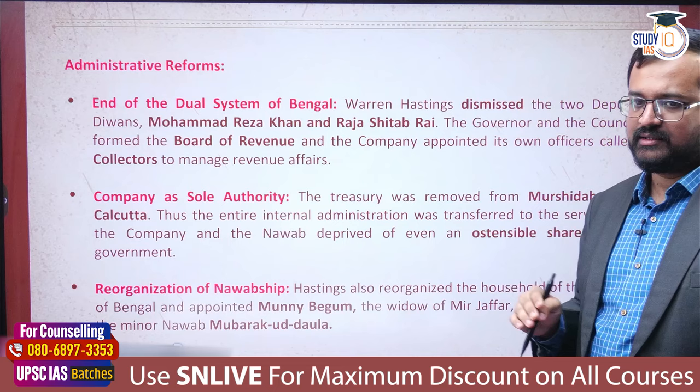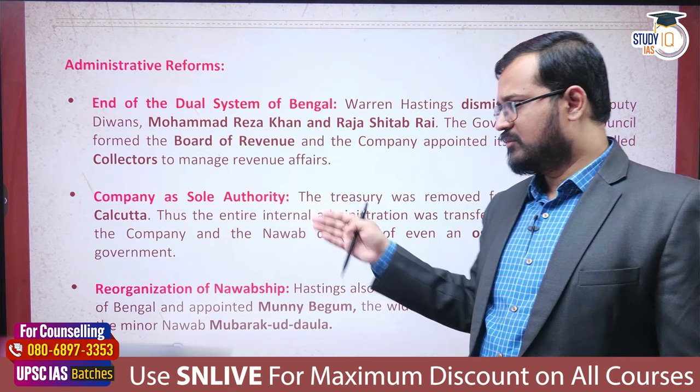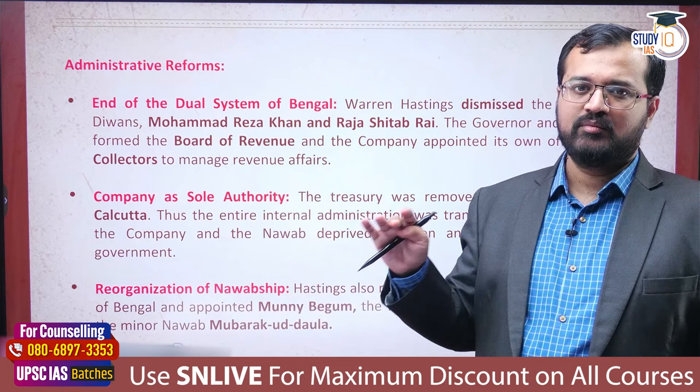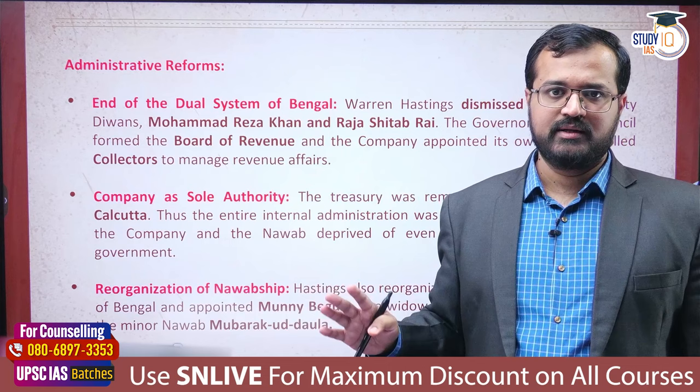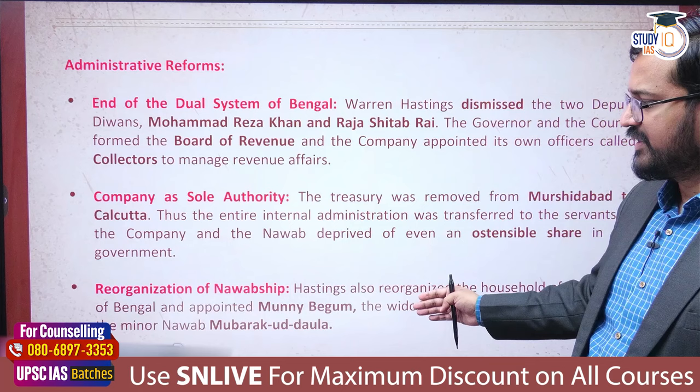Warren Hastings created the post of Collector in Bengal for collection of revenue. The Company became the sole authority of Bengal, and the British government secured this position. The company would undertake the administration of Bengal directly, and for that purpose the Governor of Fort William — Warren Hastings — was elevated to the position of Governor General of Bengal, thereby making Warren Hastings the first Governor General of Bengal.